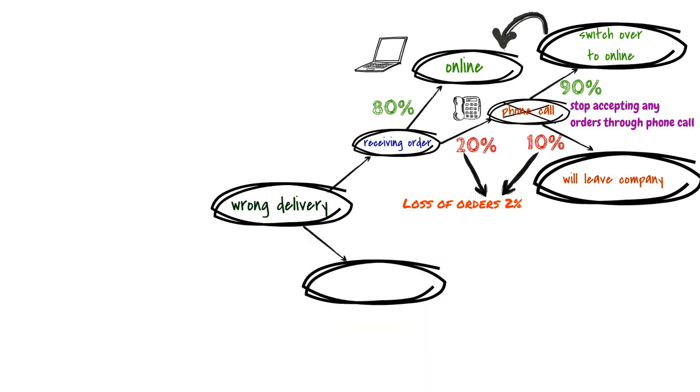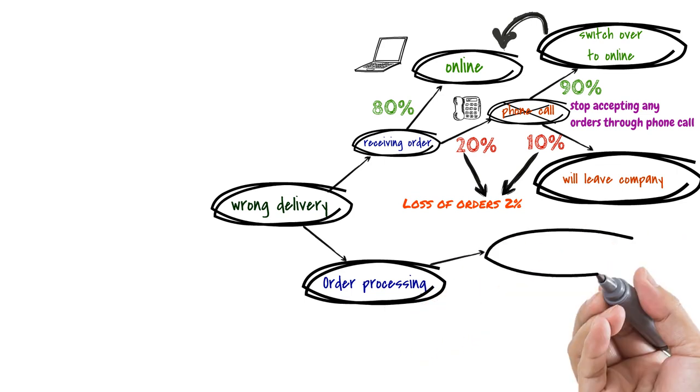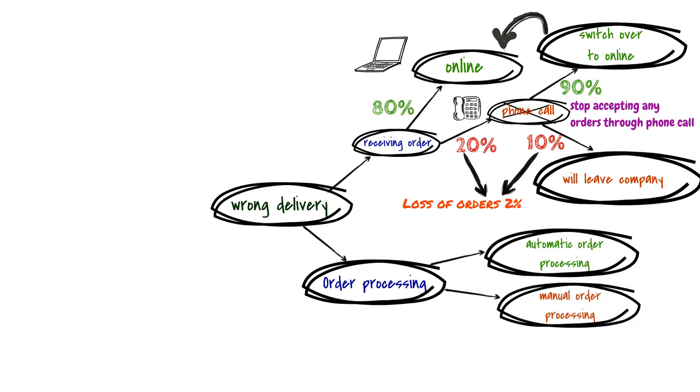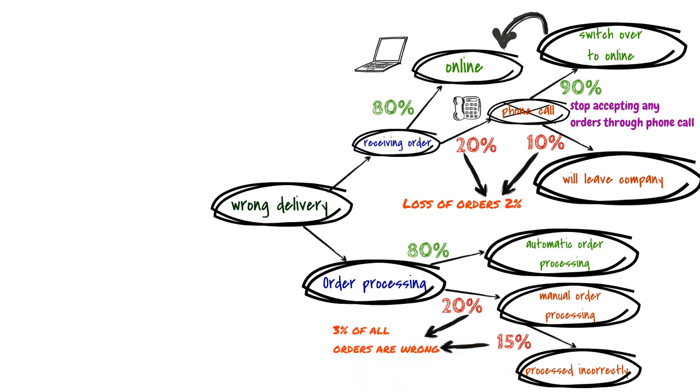Another connection to the main subject would be the order processing. Depending on the way we receive the orders, we process the order either automatically or manually. As we know already, 20% of the orders we receive are being processed manually. Estimated 15% of all manually processed orders are processed incorrectly. That means that 3% of all orders are wrong. As a possible solution, we can implement a checkpoint after the manual processing step. Does it really make sense to implement a checkpoint just to prevent 3% of wrong orders? To be able to answer this question, we add a new connection to the main subject. The title will be checkpoint.